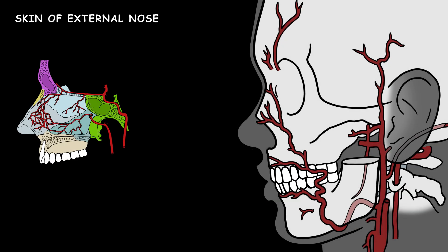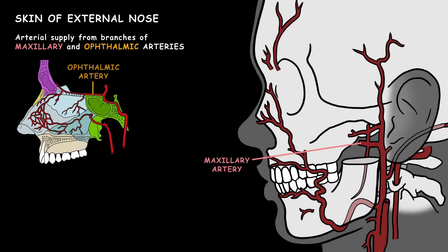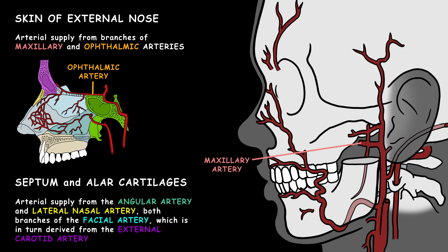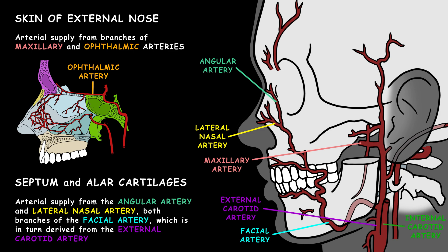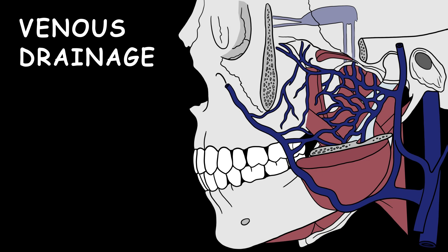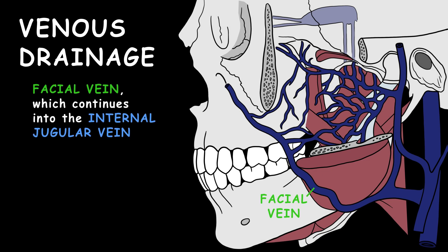The skin of the external nose gets arterial supply from branches of the maxillary and ophthalmic arteries, while the septum and alar cartilages receive blood from the angular artery and lateral nasal artery, both branches of the facial artery, which is in turn derived from the external carotid artery. Venous drainage is via the facial vein, which continues into the internal jugular vein.